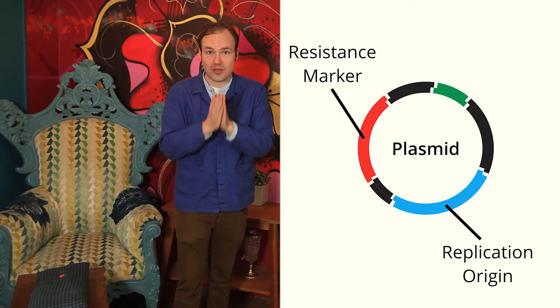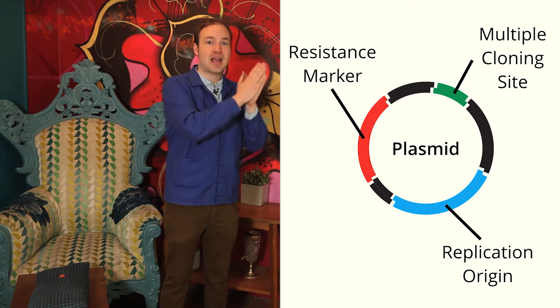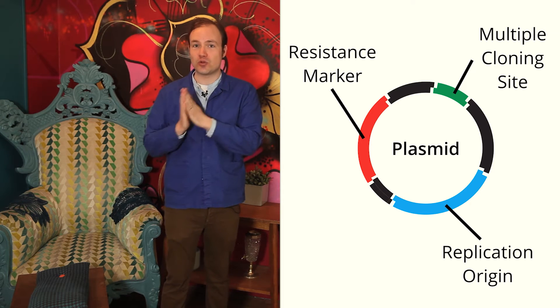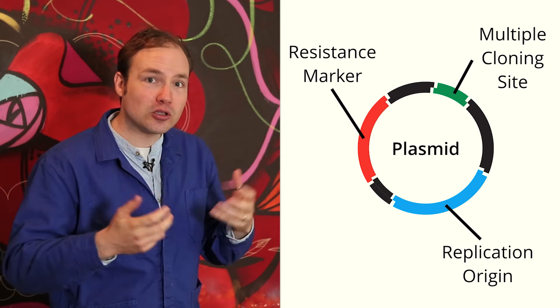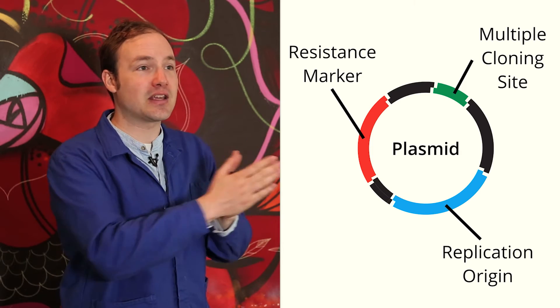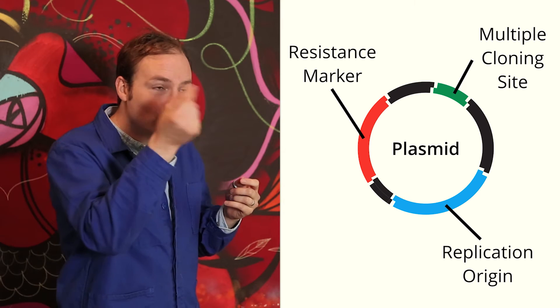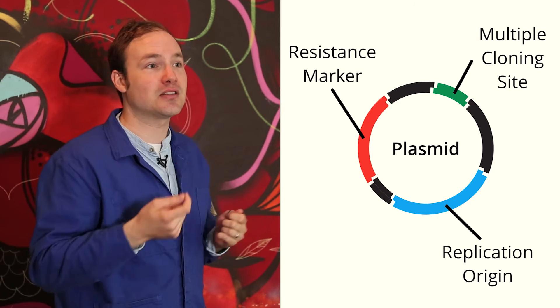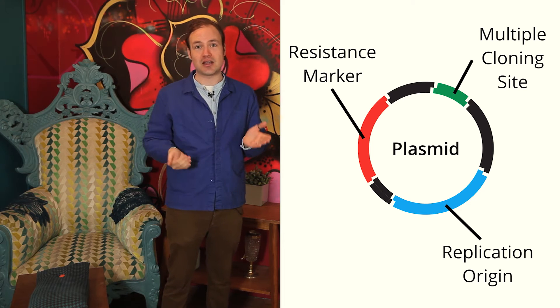Third, the multiple cloning site. Cloning, in this context, means adding a new DNA sequence to a plasmid and replicating it inside of a host. So, a multiple cloning site, or MCS, is a place where we can add new DNA. Multiple cloning sites contain many short recognition sequences for restriction enzymes, which we can use to cut open a plasmid and paste in a new DNA sequence.